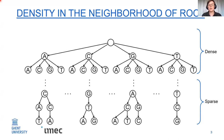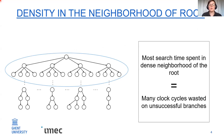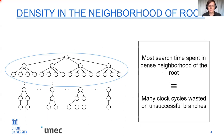What does this mean for backtracking? If you are searching and doing backtracking, you're going to spend most of your time in that neighborhood of the root, meaning many clock cycles are wasted on branches that will turn out to be unsuccessful. Search schemes try to mitigate this and reduce time spent on unsuccessful branches, pushing deeper into the tree to those sparser areas.